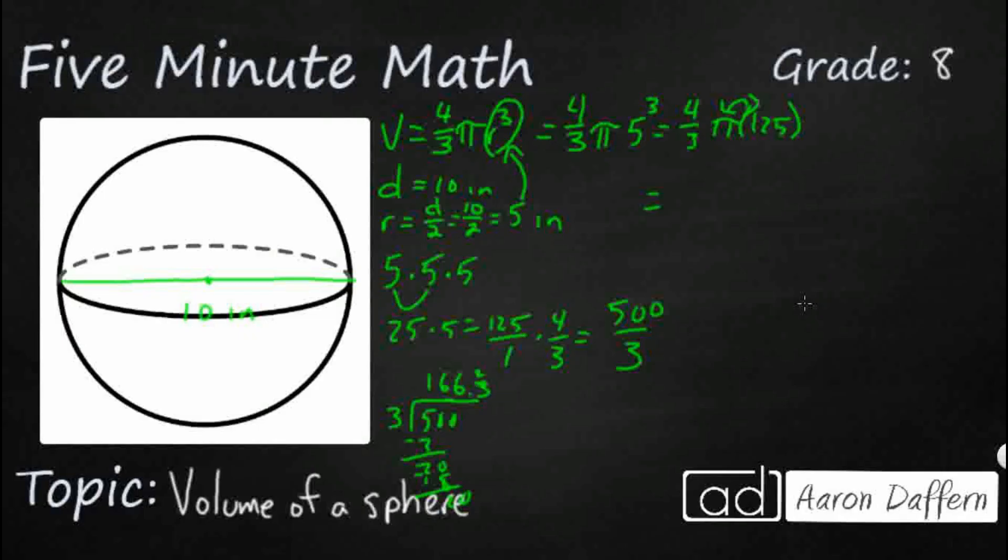So this is what I'm left with. I've got 166 and two-thirds and then I need to multiply that by pi. That's going to be my volume. It's very tricky. You see why they want you to use a calculator and just round it to the nearest hundredths place. So let's just do that. Let's just estimate right here.